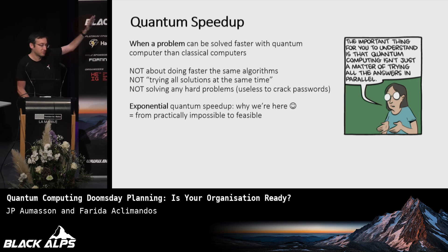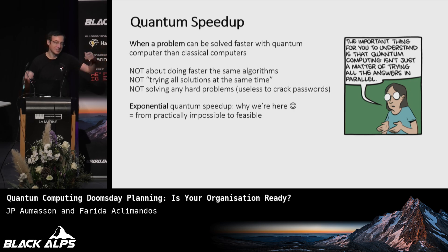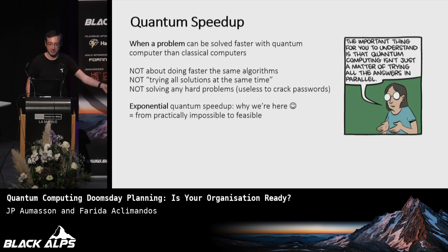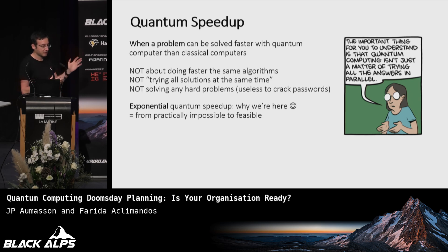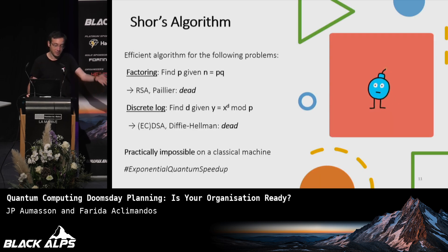The one thing to remember from this talk: quantum speedup is not a matter of trying everything at the same time. Intuitively it's tempting to think zero and one at the same time means you try all keys simultaneously — that's really not how it works. There are some problems you can solve much faster with quantum computers. It's not about frequency or doing the same stuff faster. It's about doing completely different stuff, and in fact, quite slower. It won't solve all problems — just very specific ones. But for certain problems, you have an exponential speedup, and that's why it matters in crypto.